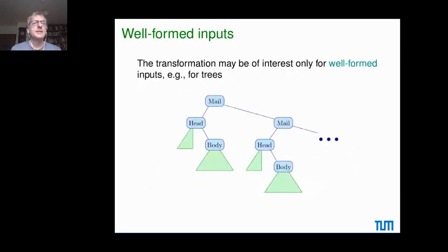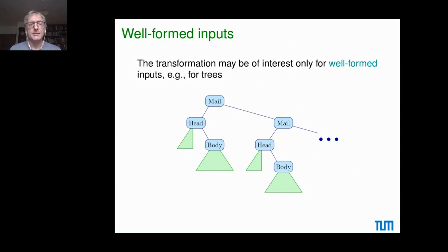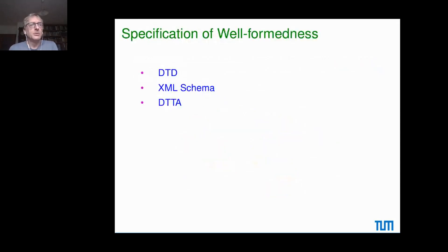Even with deterministic total transducers, you would transform anything - even ill-formed inputs. So you need another mechanism to specify well-formedness of inputs. Not every structure built up with elements like mail heads and bodies would result in a meaningful mailbox representation. There are various specification formalisms - for XML there are DTDs or XML schemas - but here we will simply use Deterministic Top-Down Tree Automata (DTTA). These also have states: for a state and an input symbol, they say how to proceed with the subtree.